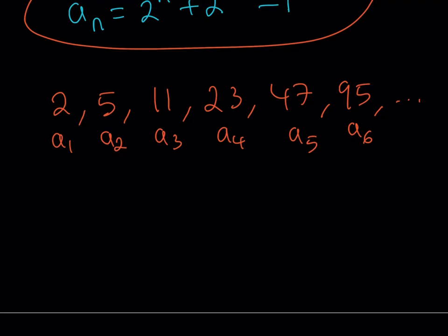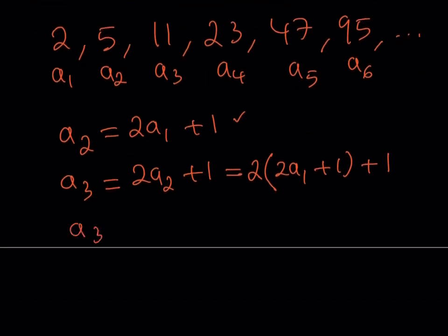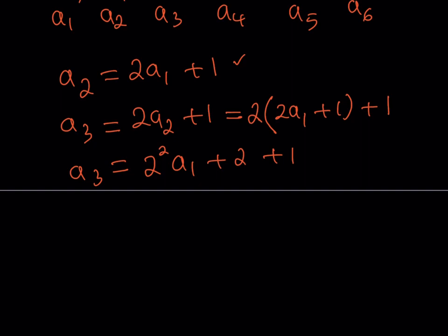I want you to see the pattern here. Look at the relationship between a_2 and a_1: a_2 can be written as 2 times a_1 plus 1. And a_3 equals 2 times a_2 plus 1. Let's simplify further by replacing a_2 with that expression. We get a_3 equals 2 times (2a_1 plus 1) plus 1, which gives us 4a_1, written as 2 squared times a_1, plus 2 plus 1. We don't want to add the 2 and the 1 yet — we want to keep the pattern visible.